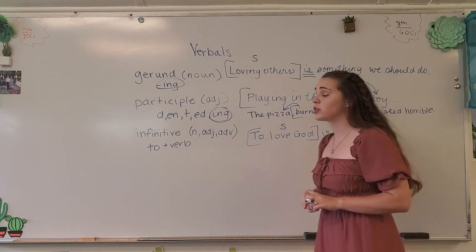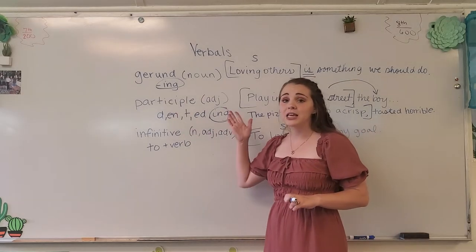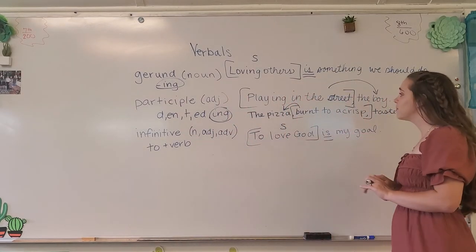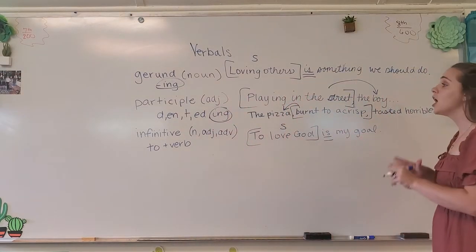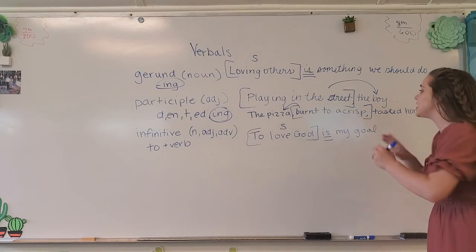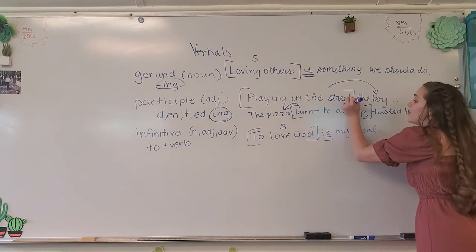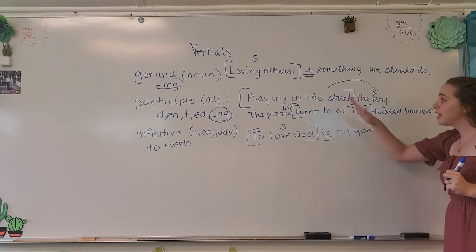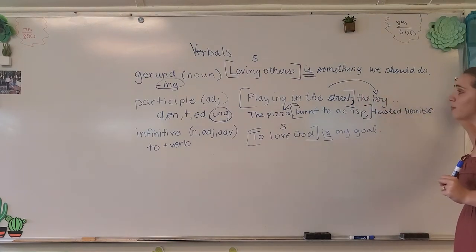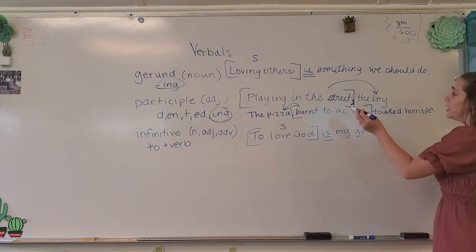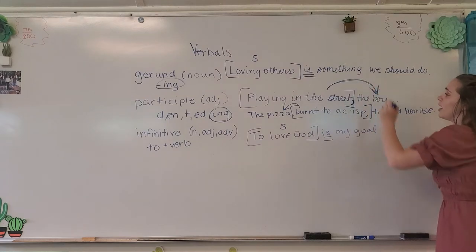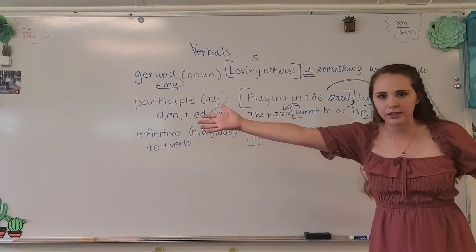Next, a participle. We know it's an adjective — you should know that. Oftentimes, participles come right at the beginning of the sentence with a comma after them. For example: 'Playing in the street, the boy almost got hit by a car.' So 'playing in the street' is describing the boy — the one playing in the street.